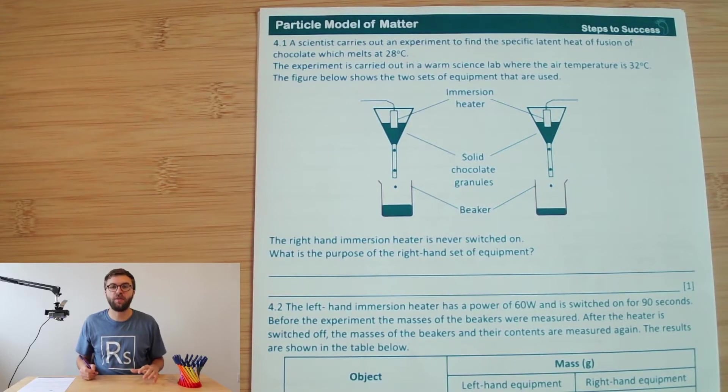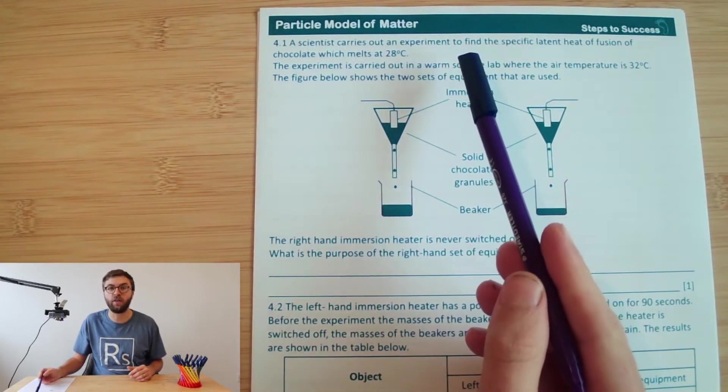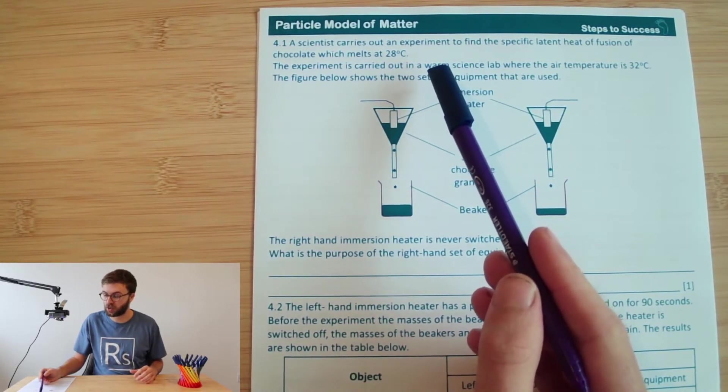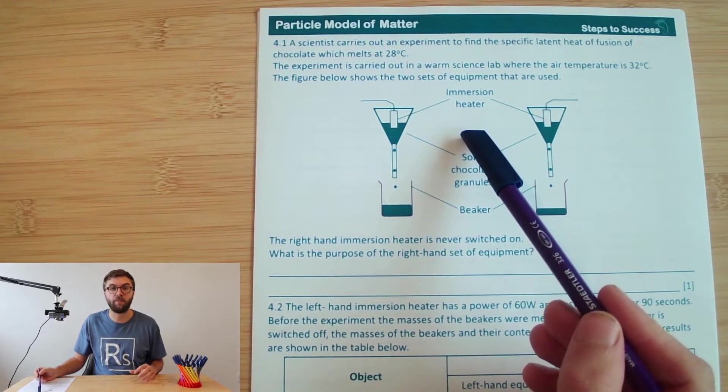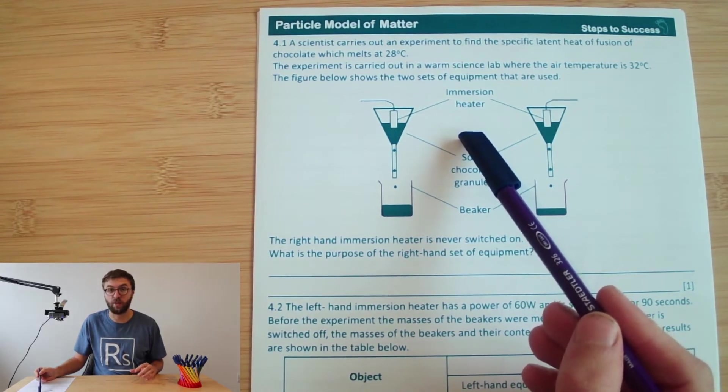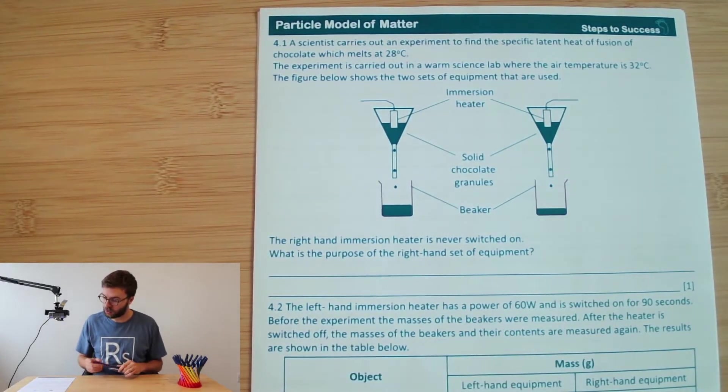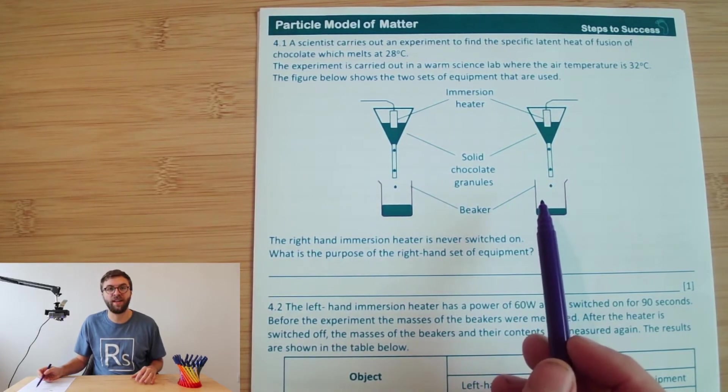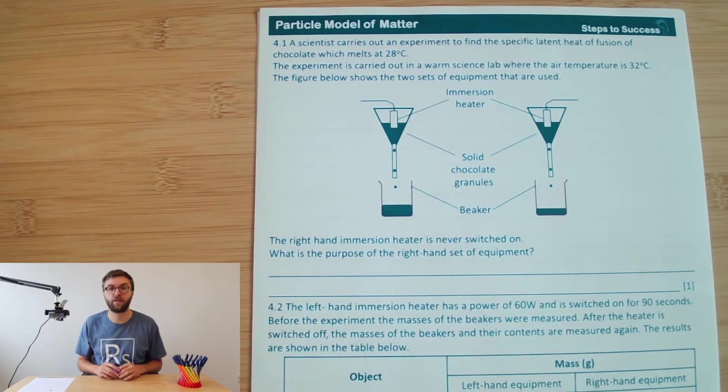Okay, so in part two, we're going to be starting off on question number four. In question four, we can see here, we've got a scientist that's carrying out an experiment to find the specific latent heat of fusion of chocolate, which melts at 28 degrees Celsius. The experiment is carried out in a warm science lab, where the air temperature is 32 degrees Celsius. The figure below shows the two sets of equipment that are used. So you can see here, they've got two identical setups. However, on the right hand immersion heater, they never switch it on. The first question asks you, what is the purpose of the right hand equipment?